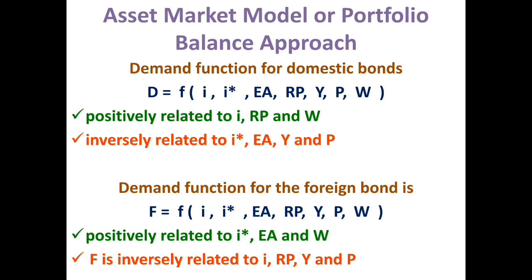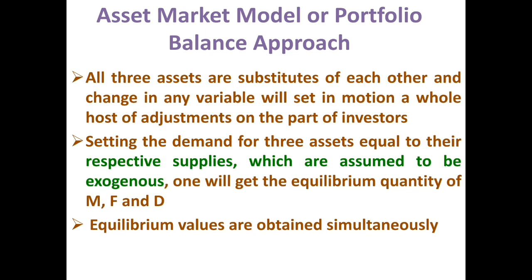Having specified the demand functions for these three financial assets — all of which are considered substitutes in the sense that changes in any one variable will set in motion a whole lot of adjustment for investors — setting these demand functions equal to their supplies: in the asset market model, supply is assumed to be exogenously determined. So we will get equilibrium quantities of all three financial assets, namely money, foreign bond, and domestic bond, and these equilibrium values are obtained simultaneously.